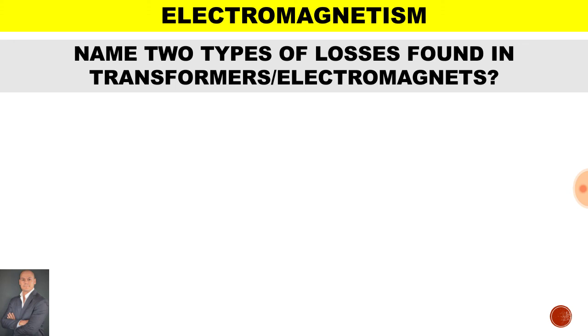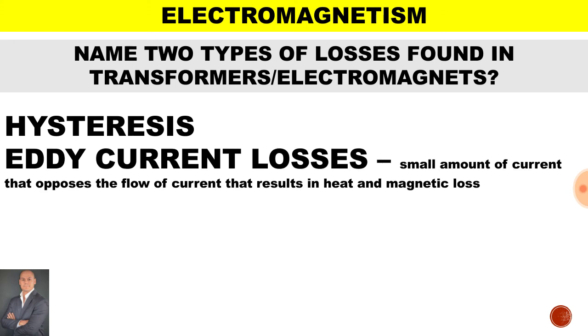Now in electromagnetism, there are two types of losses. We get the hysteresis loss, which is basically a magnetic loss. And then we get eddy current losses, which consist of heat loss and energy loss.